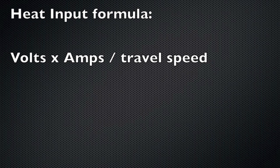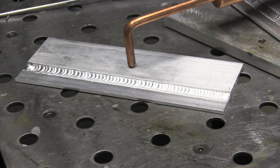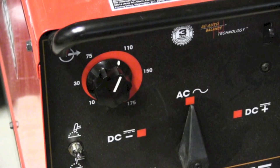The formula for heat input is like this and we won't go into this very deeply but it's volts times amps divided by travel speed. So voltage and amperage increase heat input. Travel speed, increased travel speed lowers it. Slow travel speed increases heat input. That was at a hundred amps pure argon.